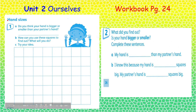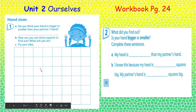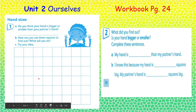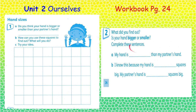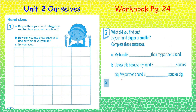Now for your workbook page 24, let's look at your hand sizes. Do you think your hand is bigger or smaller than your partner's hand? Draw around your hand and then count how many squares. Compare it with your partner's hand and complete these sentences: 'My hand is smaller or bigger than my partner's hand. I know this because my hand is __ squares and my partner's hand is __ squares.'